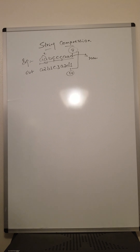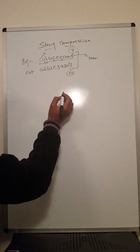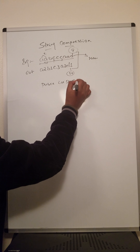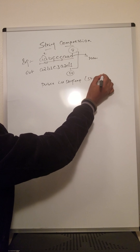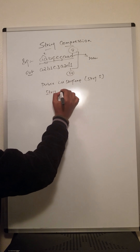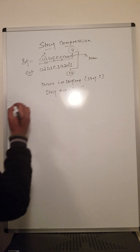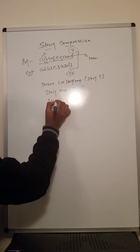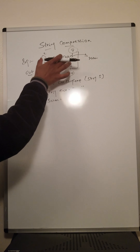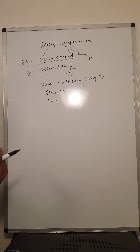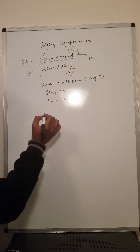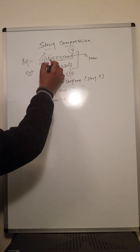Let me write the code for this. The function is string compression taking parameter s, a string. Output is initially empty. Our sum is initially one — for example, a appears at least one time, b appears at least one time.